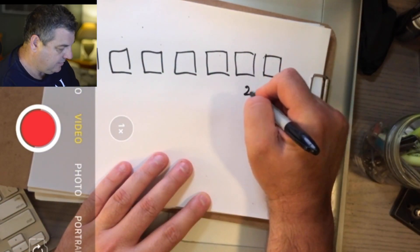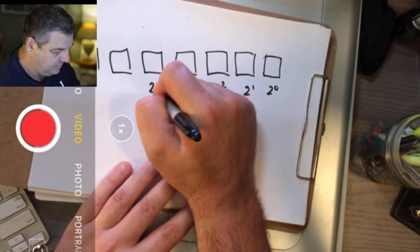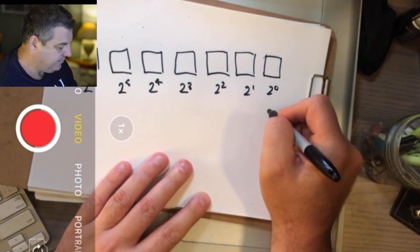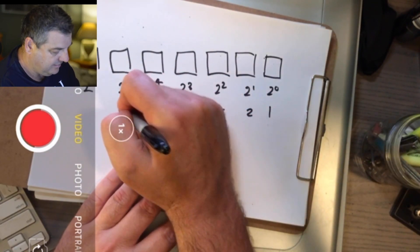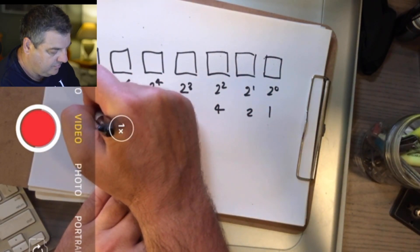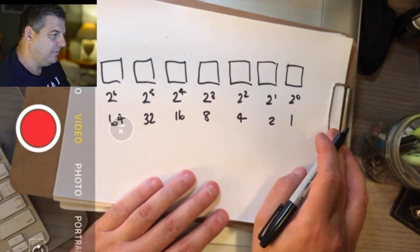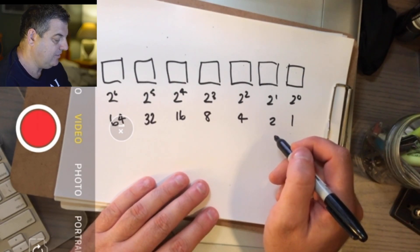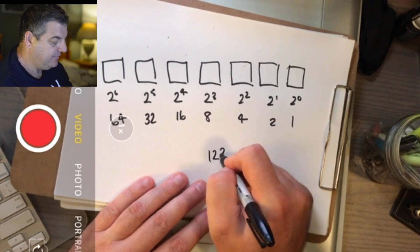So you've got 2 to the power of 0, 2 to the power of 1, 2 to the power of 2, 2 to the power of 3, 2 to the power of 4, 2 to the power of 5, 2 to the power of 6. That equals 1, 2, 4, 8, 16, 32, 64. So if you wanted to, let's move this across so you can see it better. If you want a number, let's pick a number, say 123.